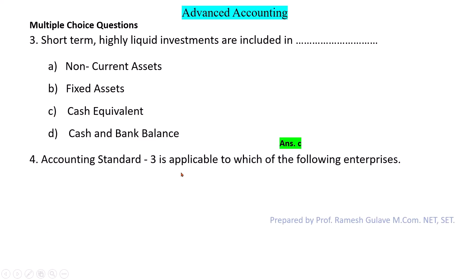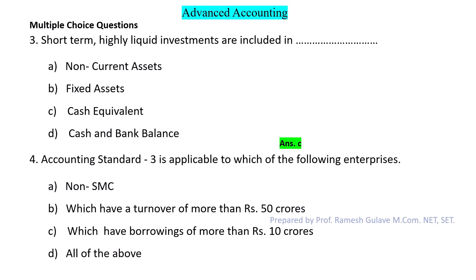Next question: Accounting Standard 3 is applicable to which of the following enterprises? Option A says non-SMCs (non small and medium companies). Option B says companies with a turnover of more than Rs 50 crore. Option C says companies with borrowings of more than Rs 10 crore. AS3 is applicable to all of these enterprises, so the right answer is option D: all of the above.